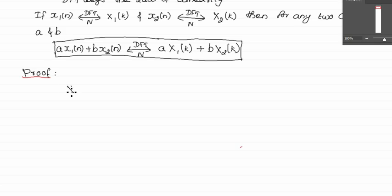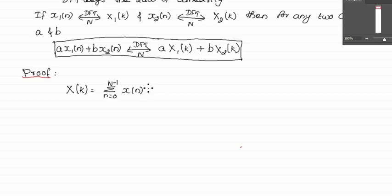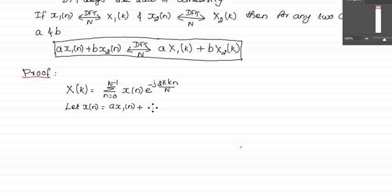We know the DFT of signal x(n) is given by X(k) = summation from n=0 to N-1 of x(n) · e^(−j2πkn/N). Now we are considering x(n) = a·x1(n) + b·x2(n).